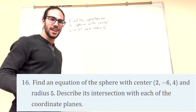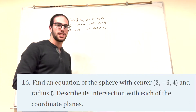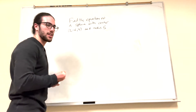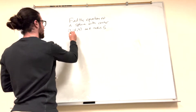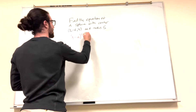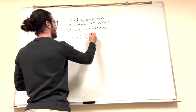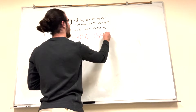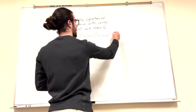Alright, so how are we going to do this? Well, this problem requires a little bit of memorization. You need to know what the equation of a sphere is. For a sphere, it's going to be (x minus a number) squared plus (y plus a constant) squared plus (z plus some other constant) squared, and that's going to be equal to the radius squared.